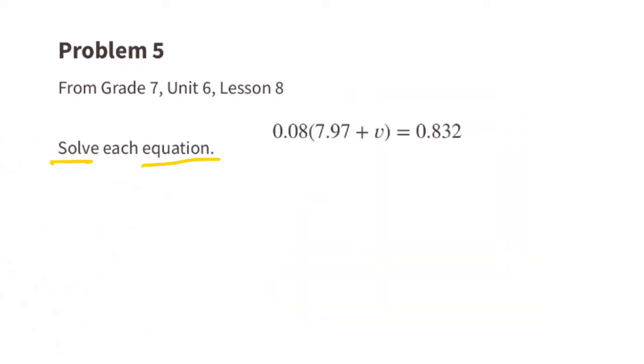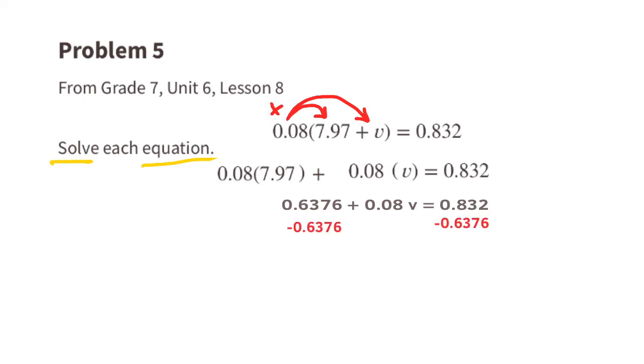Again, we multiply all the terms on the inside of the parentheses by the number on the outside of the parentheses. 0.08 times 7.97 plus 0.08 times V equals 0.832. To get the V alone, we need to subtract 0.6376 from both sides of the equal sign. And to make that 1V, we need to divide both sides by 0.08. So now we have 1V, or V, equals 2.43.